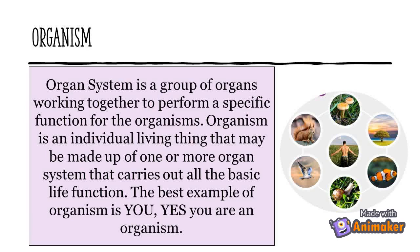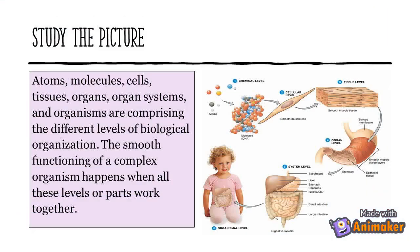An organism is an individual living thing that may be made up of one or more organ systems that carry out all the basic life functions. The best example of an organism is you — yes, you are an organism. Atoms, molecules, cells, tissues, organs, organ systems, and organisms are all comprised in the different levels of biological organization. The smooth functioning of a complex organism happens when all these levels or parts work together.